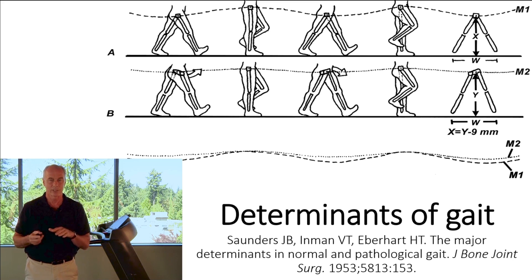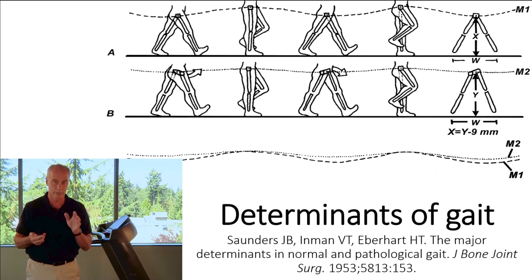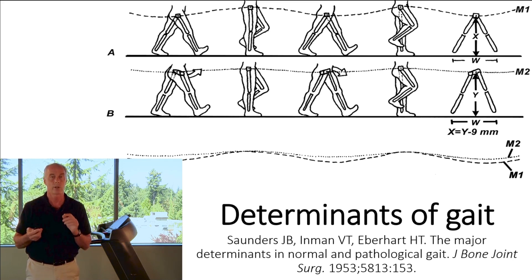Subtle changes — not in stride length, but in pelvic rotation and knee flexion — are called the determinants of the gait cycle.